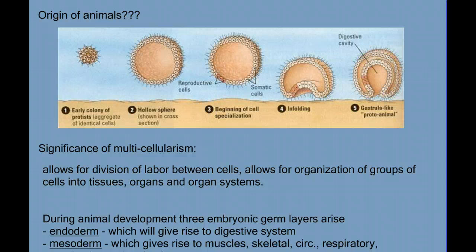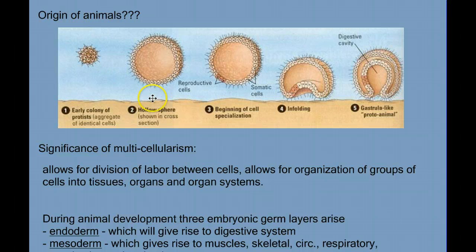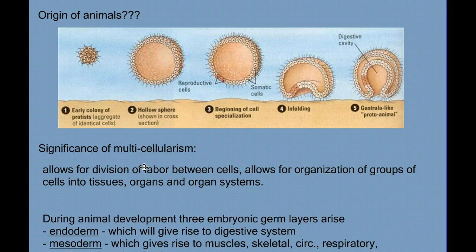Like plants, our best evidence comes from the hypothesis that animals evolved from some aggregate of animal-like protists. These colonial heterotrophic protists may have evolved into a multicellular organism, some early proto-animal, with the development of cell specialization. When certain cells started to become specialized for different tasks, they became interdependent. While the cells could no longer live independently, they became more efficient at what they do.